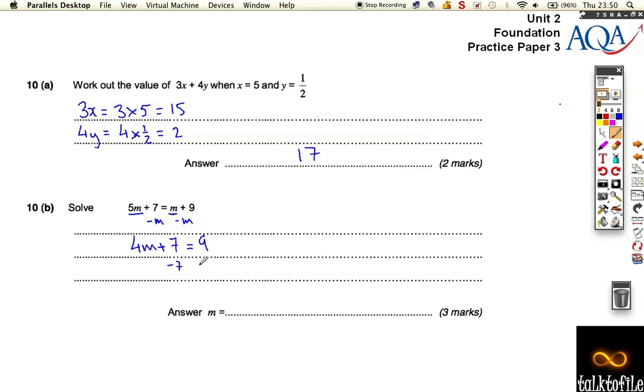Now we need to subtract 7 from both sides, which gives us, let's walk over here, 4m is equal to 2. 9 take away 7 is 2.